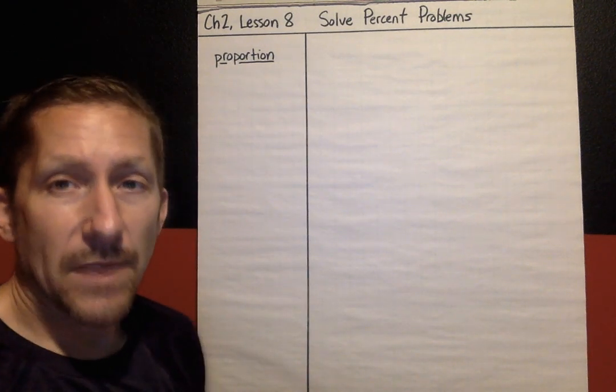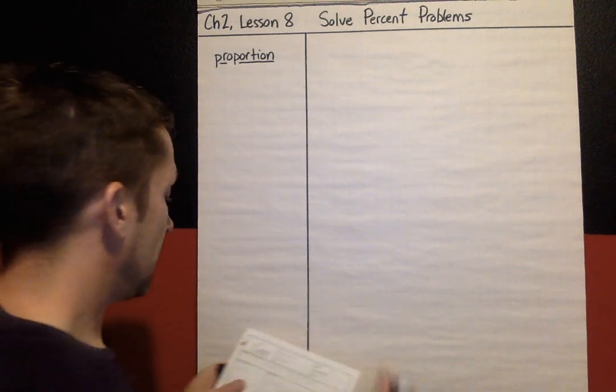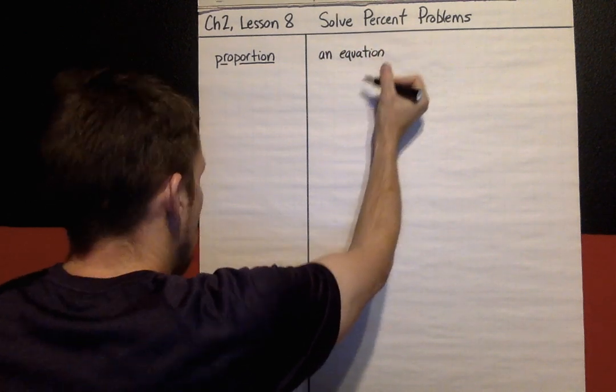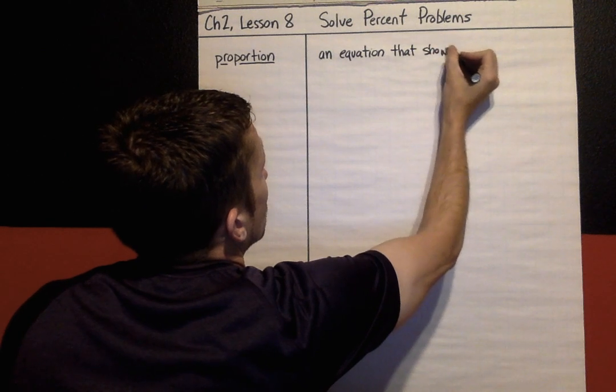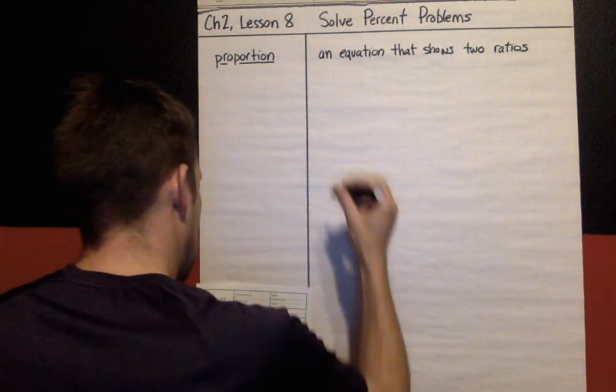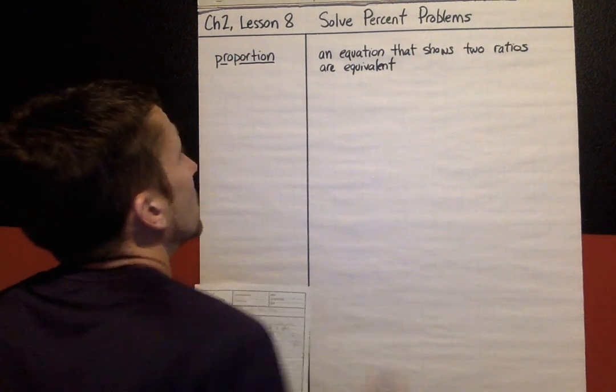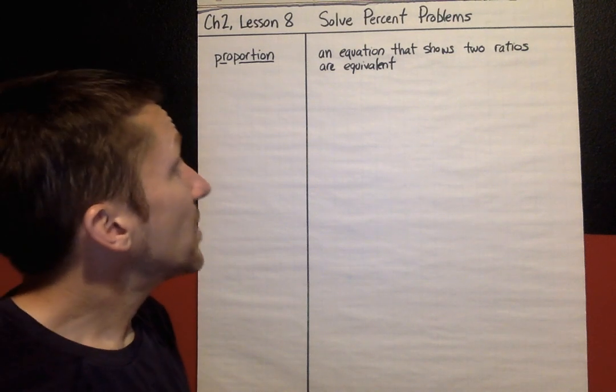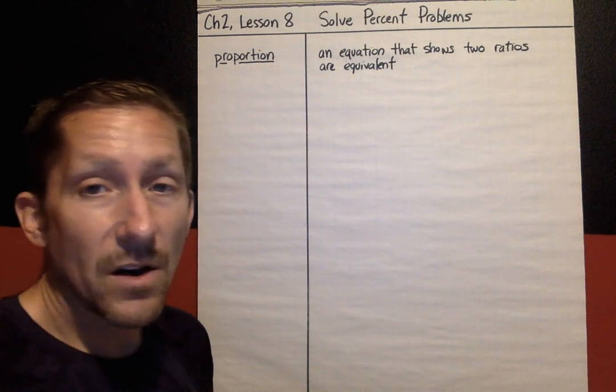Try saying it a few times. The way you say it is proportion. And a proportion is an equation that shows two ratios are equivalent. We've actually been using proportions for quite a while this year. We just haven't called them proportions.